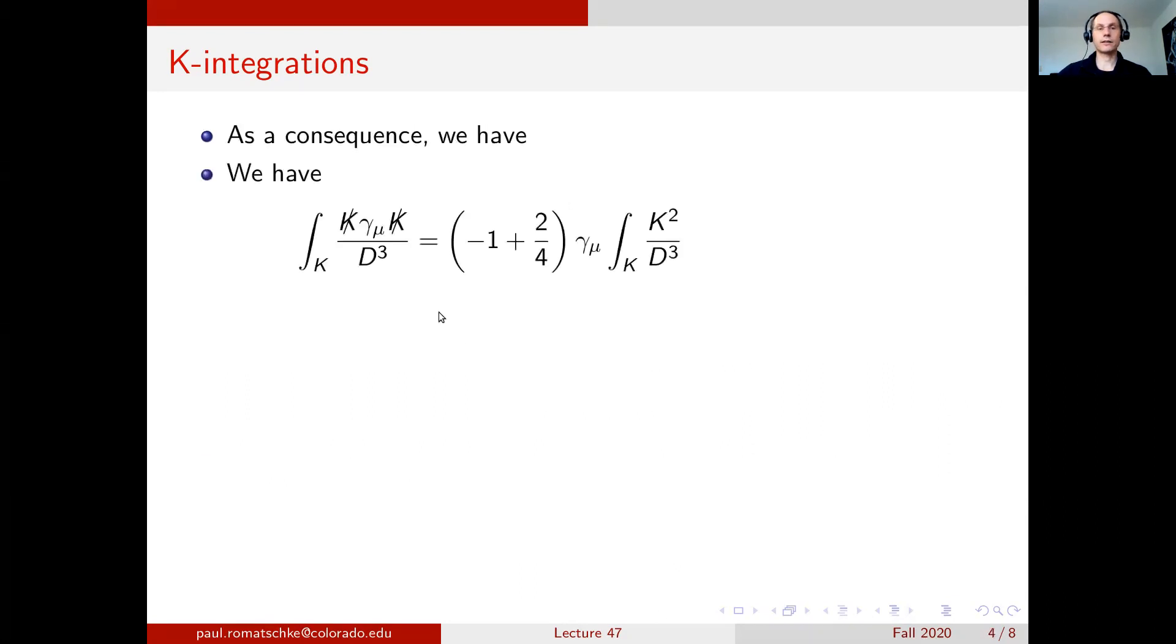As a consequence, we can write the integral k slash gamma mu k slash over D cubed as minus 1 from the k squared gamma mu that we had, plus twice the factor A which was one quarter gamma mu times the integral over k squared over D cubed. That is just minus gamma mu over two times the integral k squared over D cubed.